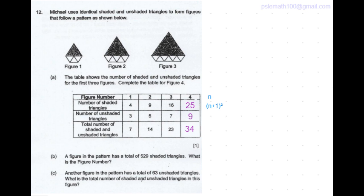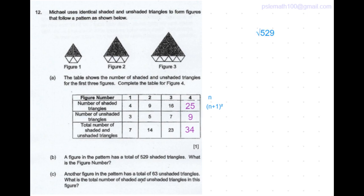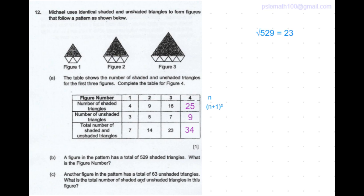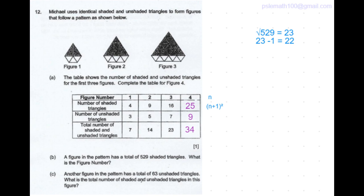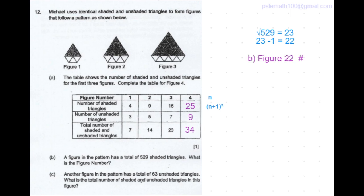A figure has 529 shaded triangles which means n plus 1 times n plus 1 is 529 which means we need to find the square root of 529. Use the square root function on the calculator. So root of 529 is 23. 23 is n plus 1. So 23 minus 1 is 22. So figure number 22 would have 529 shaded triangles.